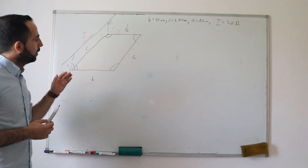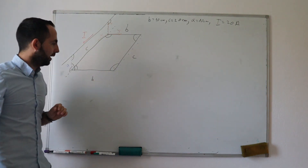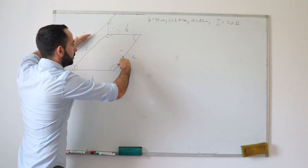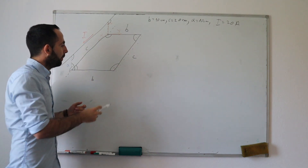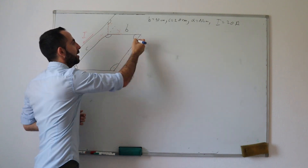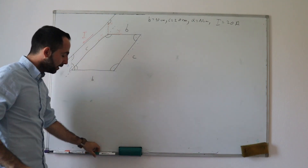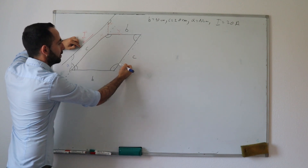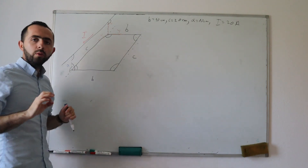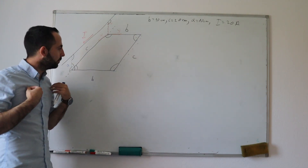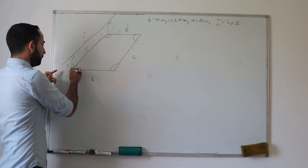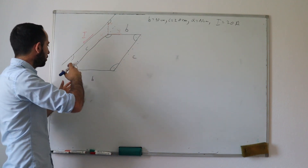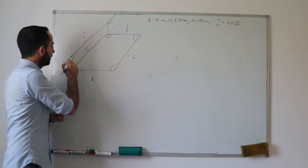The first thing we need to know is that this is an infinitely long conductor. This point is on the same distance from the conductor as this point and this point, so we will only take one point. The most convenient point for us is this one, as we have many 90-degree angles and normal sides.